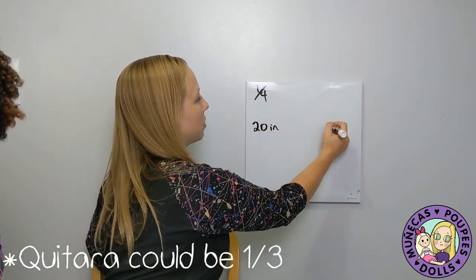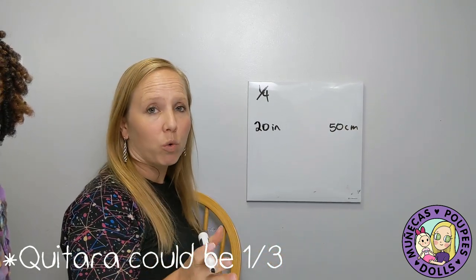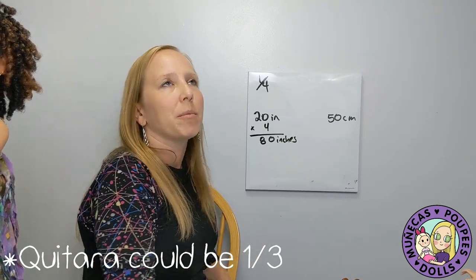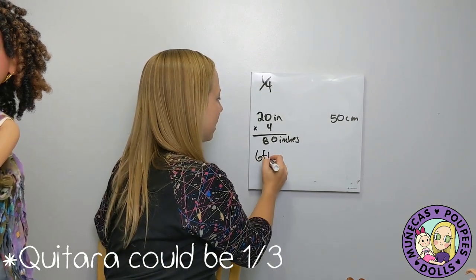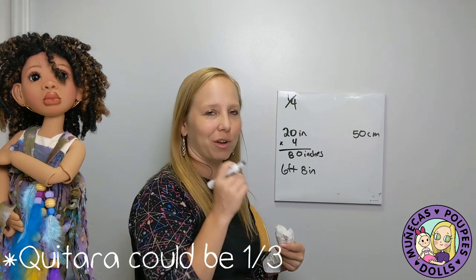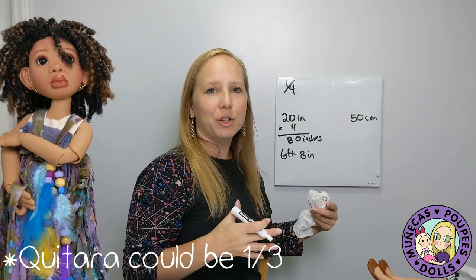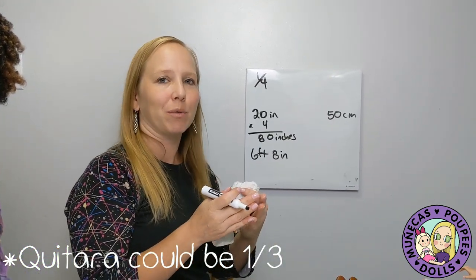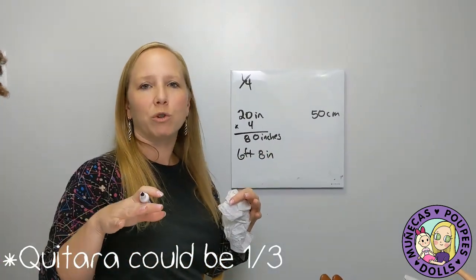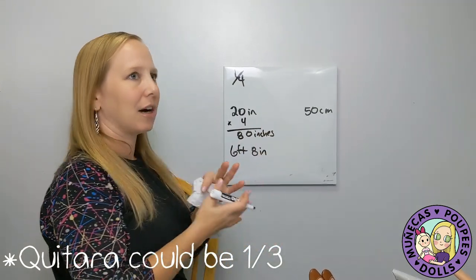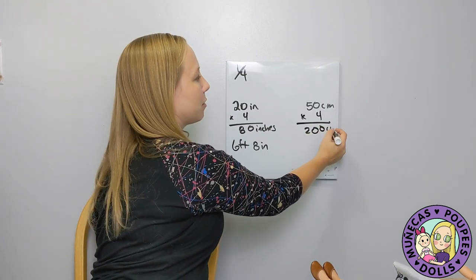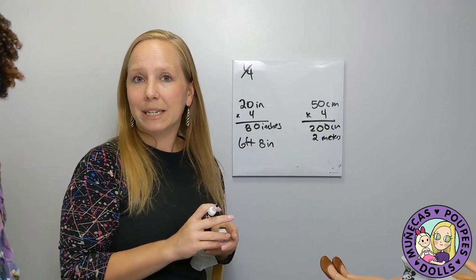Katara is 1/4 scale, so 20 inches times 4 is 80 inches. Dividing by 12: 72 is six feet, leaving eight inches — she'd be six feet eight inches tall. That's where you get the stylistic artistic interpretation. In centimeters: 50 times 4 is 200 centimeters, or two meters tall — quite a tall lady!